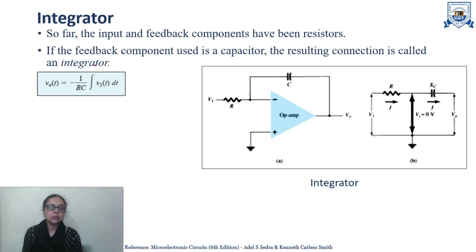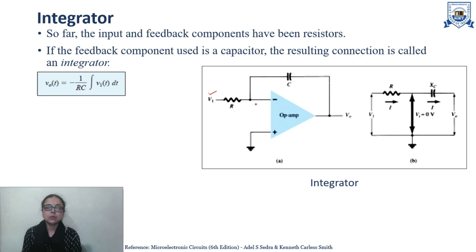First of all, what is the integrator circuit? This is the integrator circuit based on an operational amplifier. It consists of a resistor applied at the input, with an input signal applied through this resistor, and in feedback the circuit is having a capacitor instead of the resistor.